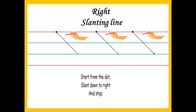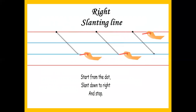First we'll start from the dot, in a slanting way, come down, touch the last dot. This is right slanting line. Again the same way — start from the dot, slant down in a right way. This is right slanting line.